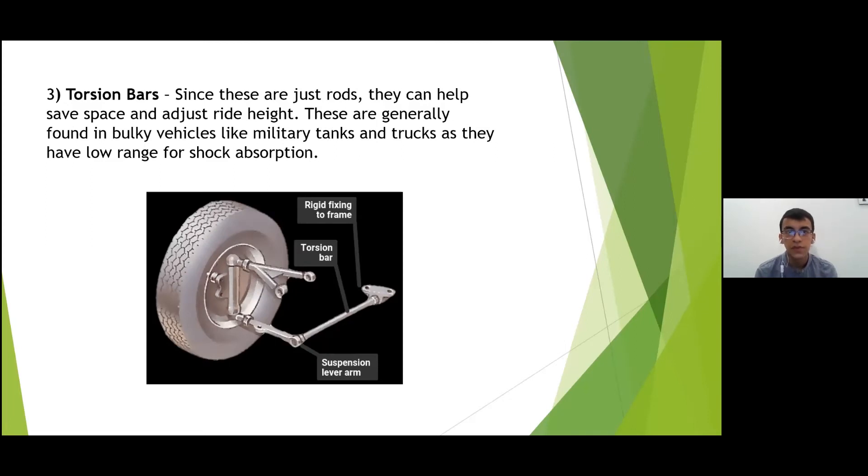The third type of springs are torsion bars. Since these are just rods they can help save space and the ride height can also be adjusted according to requirement. These are generally found in bulky vehicles like military trucks as they have low range for shock absorption.